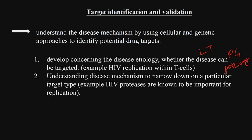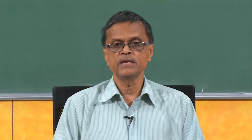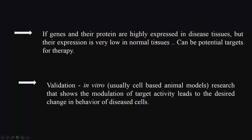Then you need to do genomics and proteomics: get the gene sequence and gene expression data for the disease tissue compared to normal tissue. You need to know which genes get upregulated and which get downregulated in disease conditions versus normal conditions. If genes and proteins are highly expressed in disease tissues but their expression is very low in normal tissues, then that could be the target for therapy.